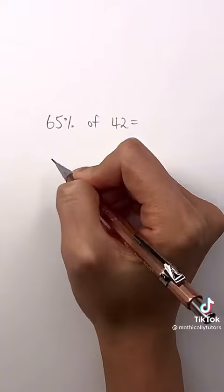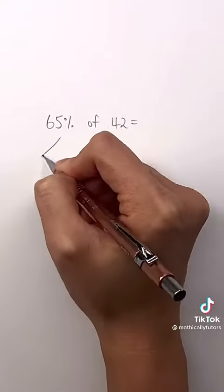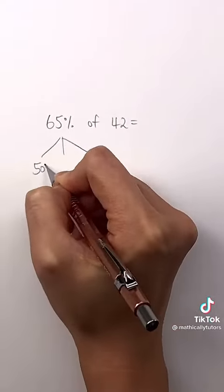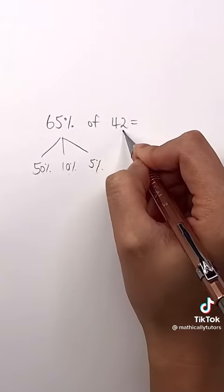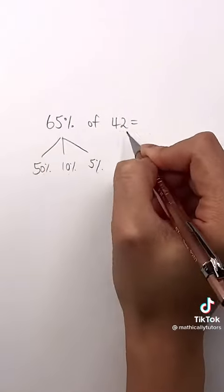Well, we can break down the 65% into easier percentages to work with, and so we can break this down into 50% plus 10% plus 5%. And all we should do is find 50% of 42 plus 10% of 42 plus 5% of 42 to get a total of 65% of 42.